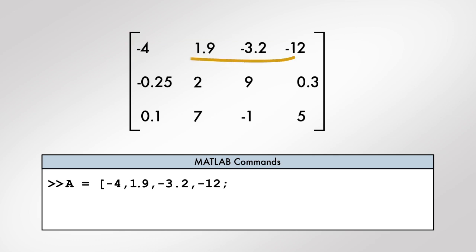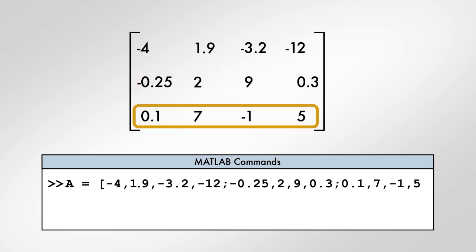Use a semicolon to indicate the end of the current row and beginning of another. Repeat the process of creating a row by separating the numbers with commas and starting a new row with a semicolon.